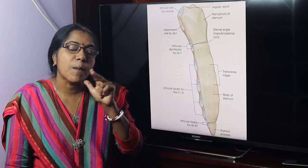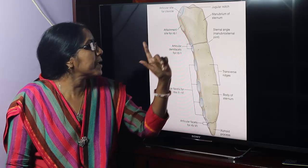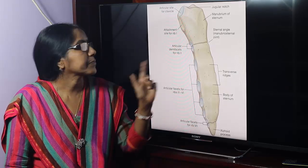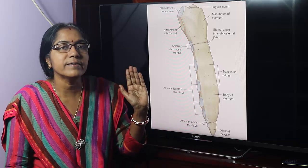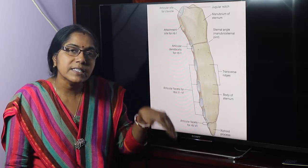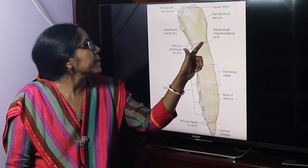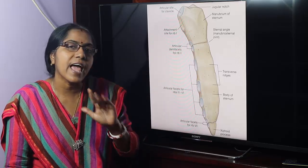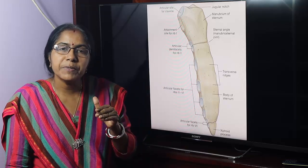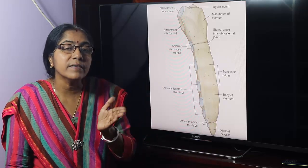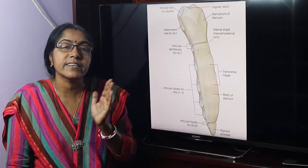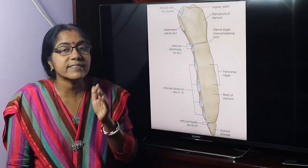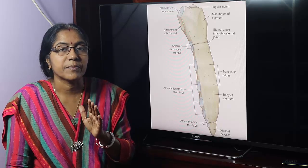The sternum is composed of three parts: manubrium, body, and xiphoid process. These three components articulate with each other at the manubriosternal joint. The sternal angle is 163 degrees; it increases slightly during inspiration and decreases slightly during expiration.